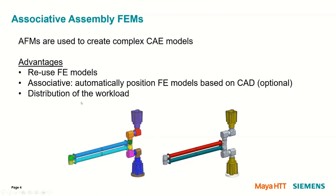Assembly FANs allow you to reuse a model. For example, my rotary actuator — I won't have to mesh it seven times. I can mesh it once and reuse that same mesh for all the other rotary actuators. Since it's associated, the software will automatically detect where those actuators are positioned in the CAD assembly and position them in the right locations. If I change the position of the CAD assembly, I'll have an option to update the FE model at the same time.